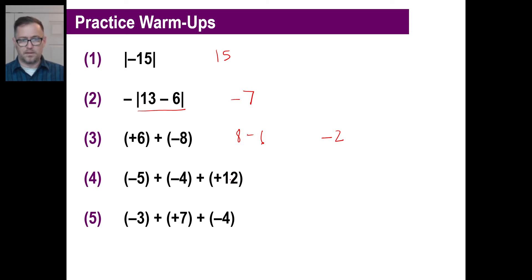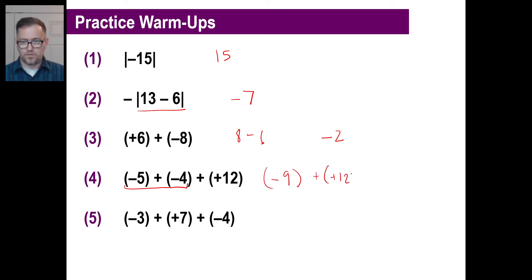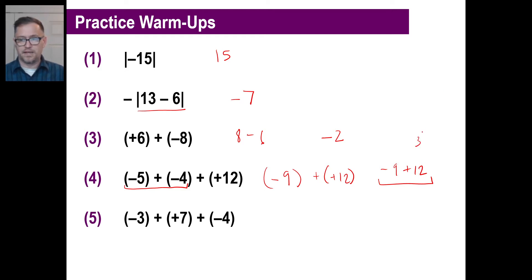Number 4: the easiest way is probably going left to right, although you can clump together all the numbers with the same sign if you want. The rule is if you have two numbers that have the same sign, you simply take their absolute values and add them — 5 plus 4 is 9 — and then you take the sign of the numbers. So negative 9 plus positive 12: now we have opposite signs, so 12 minus 9 is 3. Which one has the greater absolute value? The answer is positive 3.